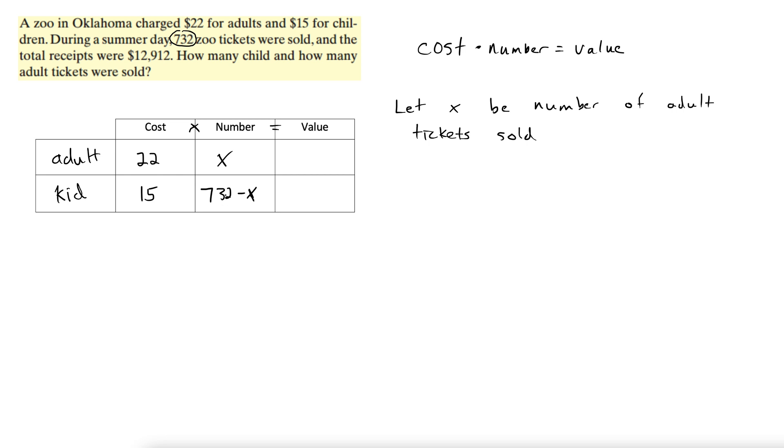I took the total number of tickets sold, I subtracted off the adult tickets, that gives us the kid tickets. There's only adult and kid tickets sold, period, so the rest of them must be the kid tickets.